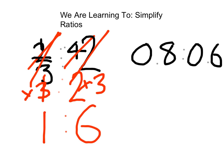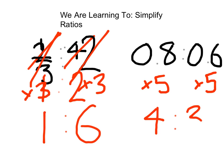For the ratio 0.8 to 0.6, it's easiest to find a number we can multiply both decimal fractions by in order to get a whole number — in this case we multiply by five. 0.8 times five equals four, and 0.6 times five equals three, so the simplest ratio form for 0.8 to 0.6 is four to three.